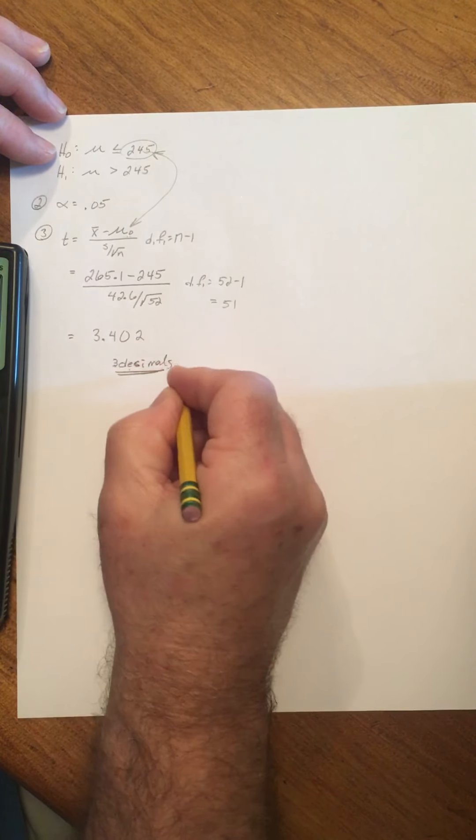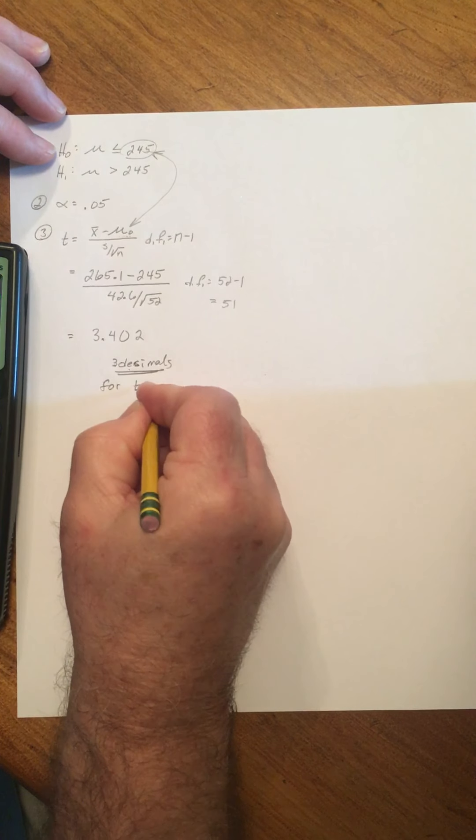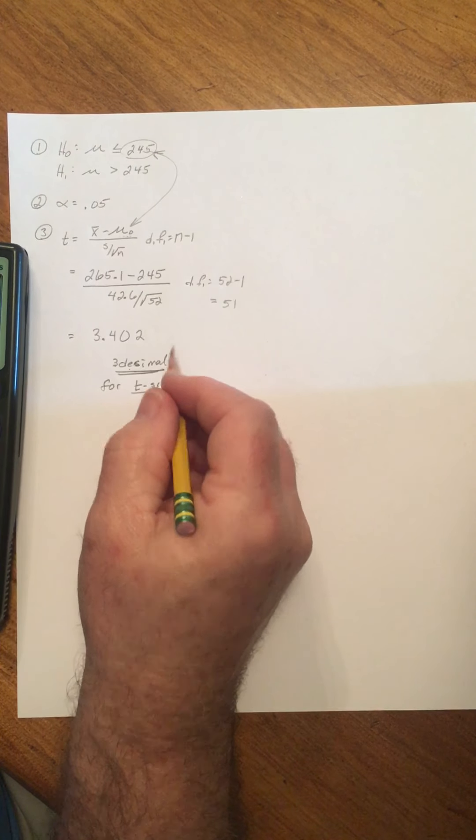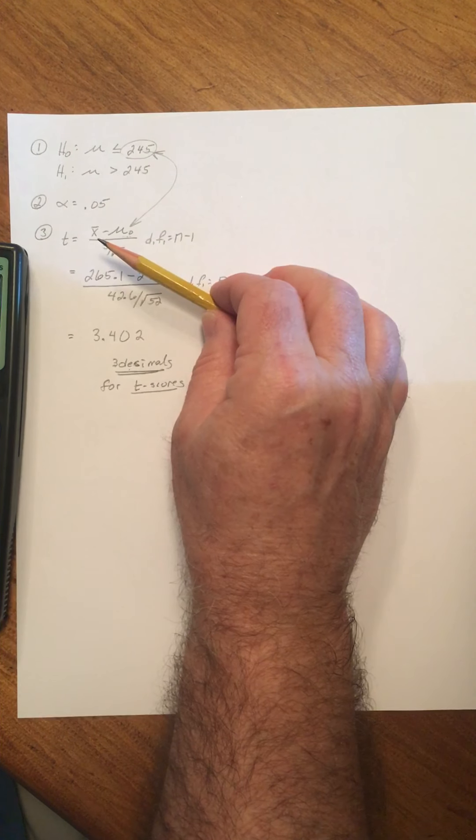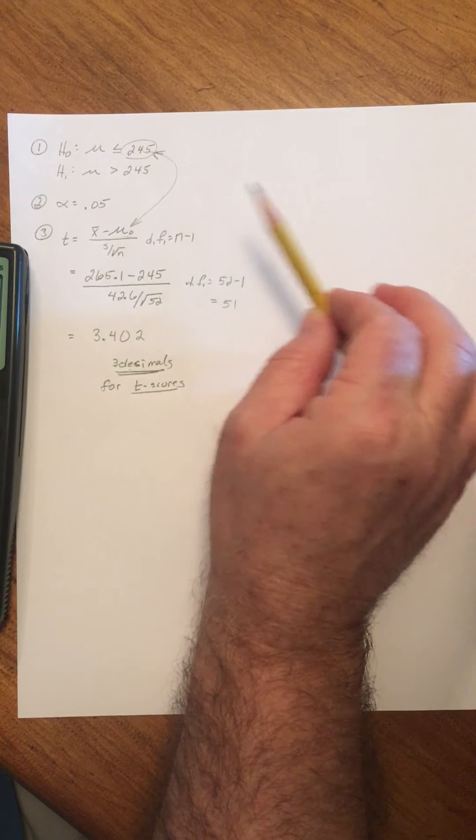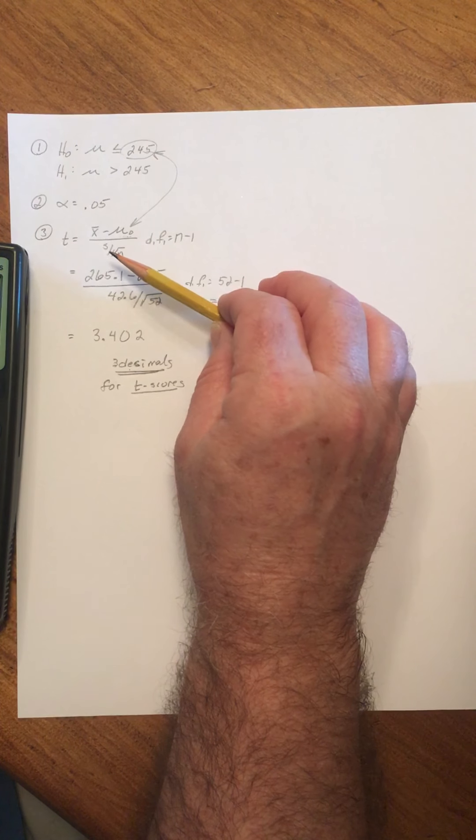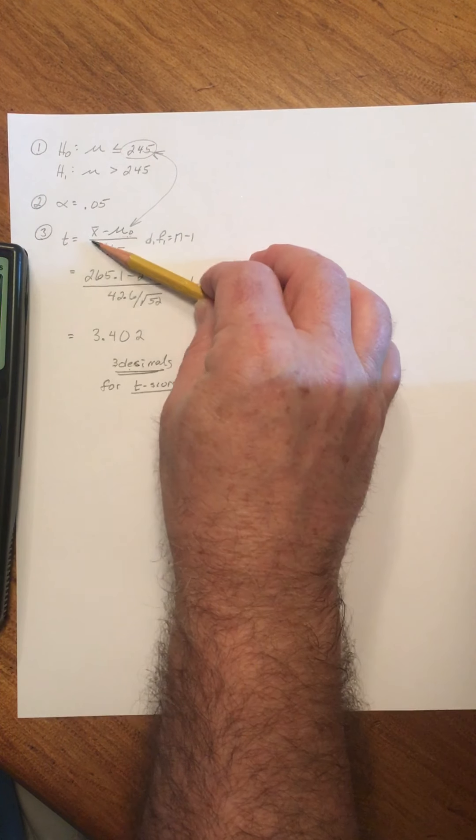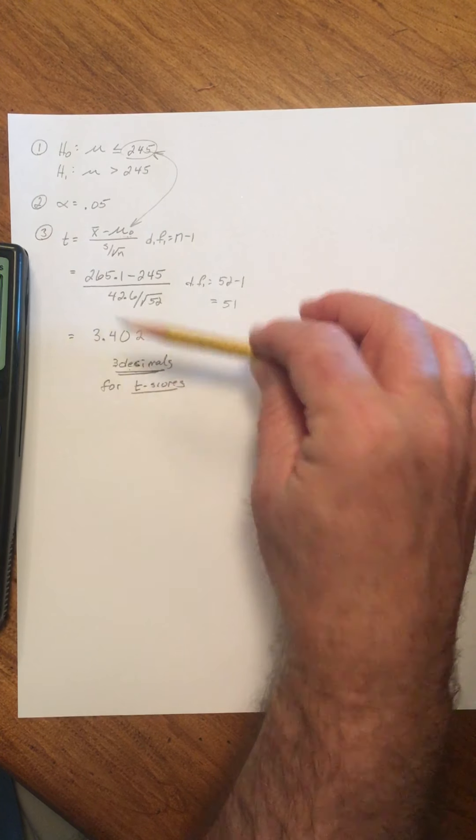Three decimals for t-scores. Later we're going to be computing z-scores in a different type of problem. Z as in zebra. Z uses two decimals. T, tango, uses three decimals.